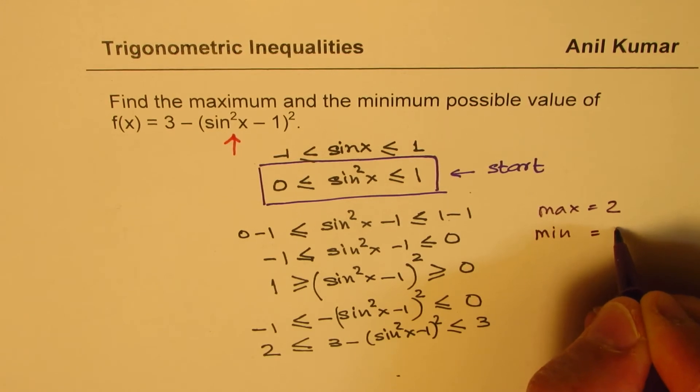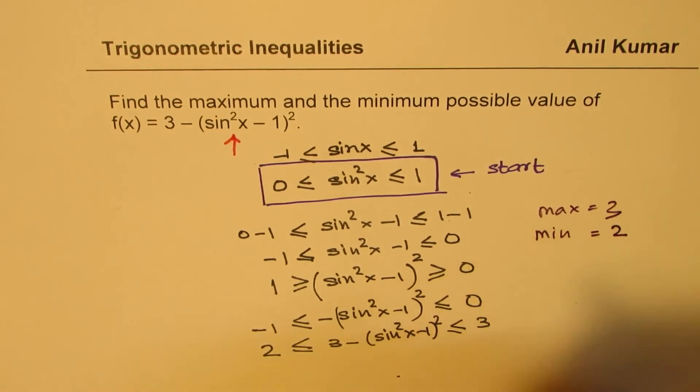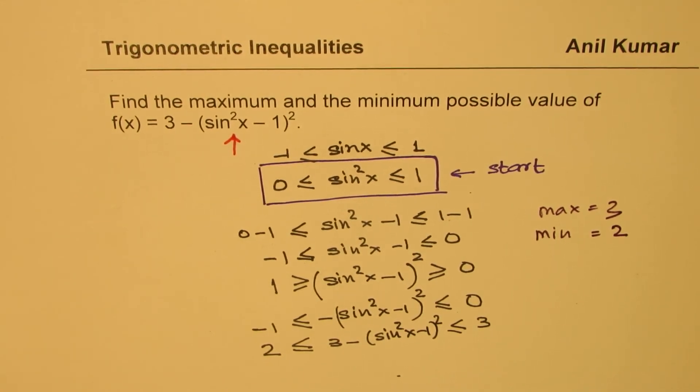Therefore, for the given function, the maximum value is equal to 3 and the minimum value is 2. So that is how you can get the solution of your question. I hope the steps are clear. We are going to use these small things in solving complicated questions on trigonometric inequalities, and therefore it is important to lay stress on these things. I hope it makes sense. Feel free to write your comments and share your views, and if you like and subscribe to my videos, that'd be great. Thanks for watching and all the best.